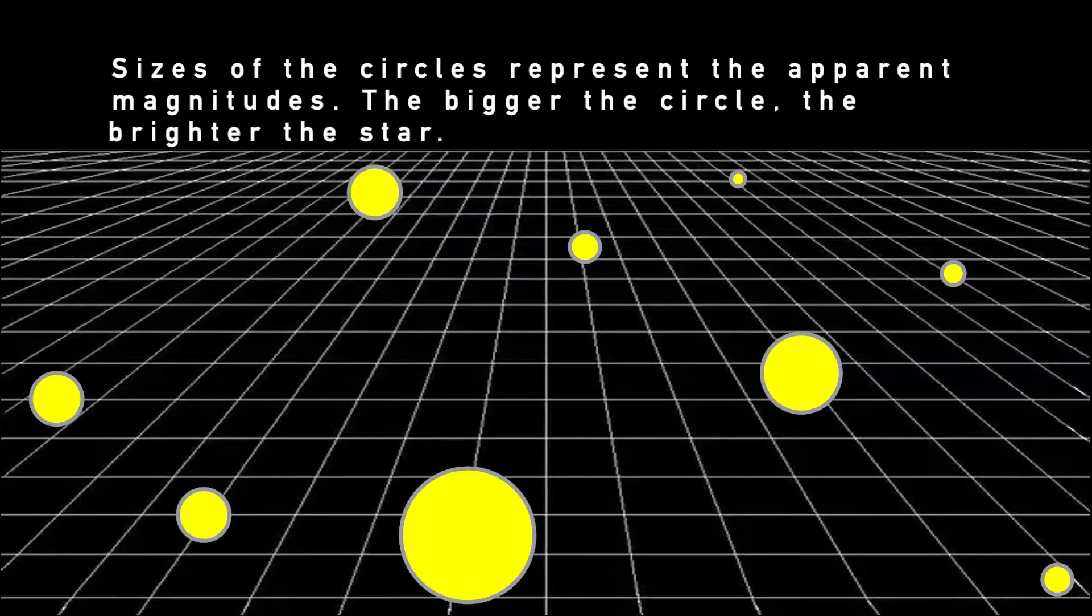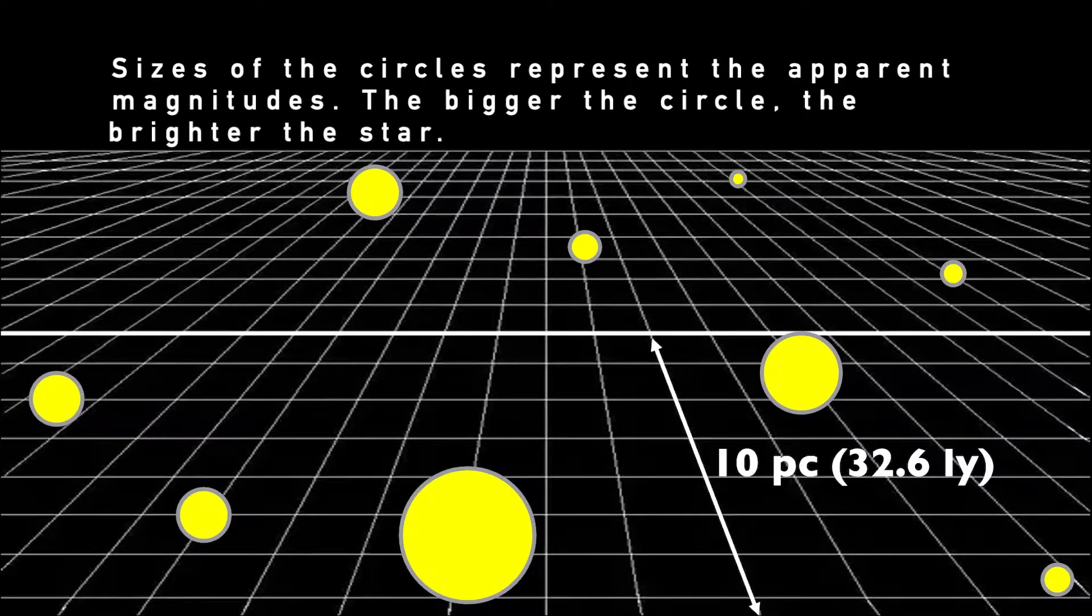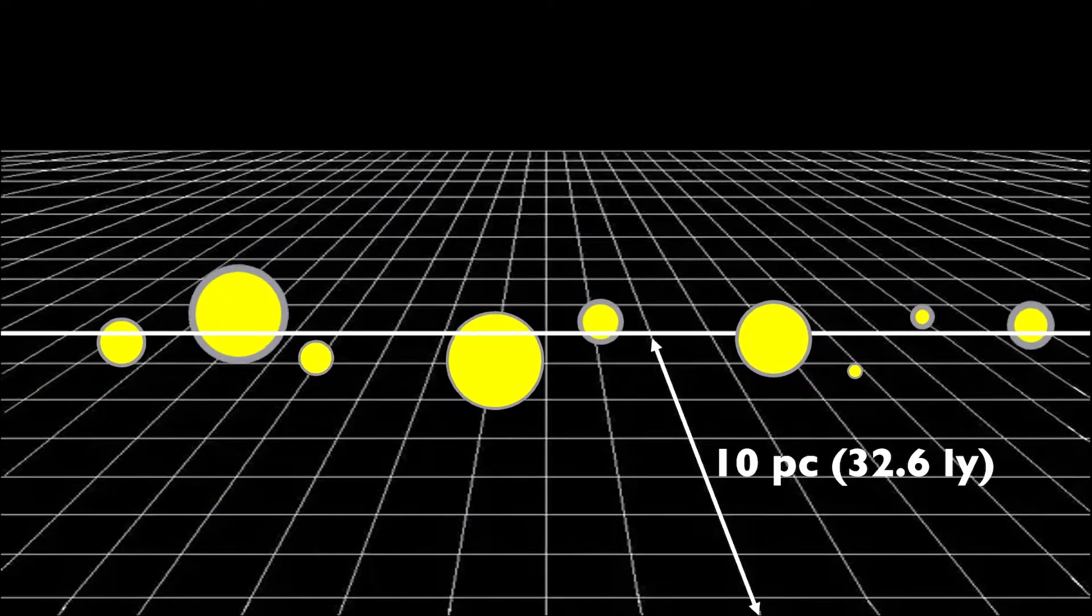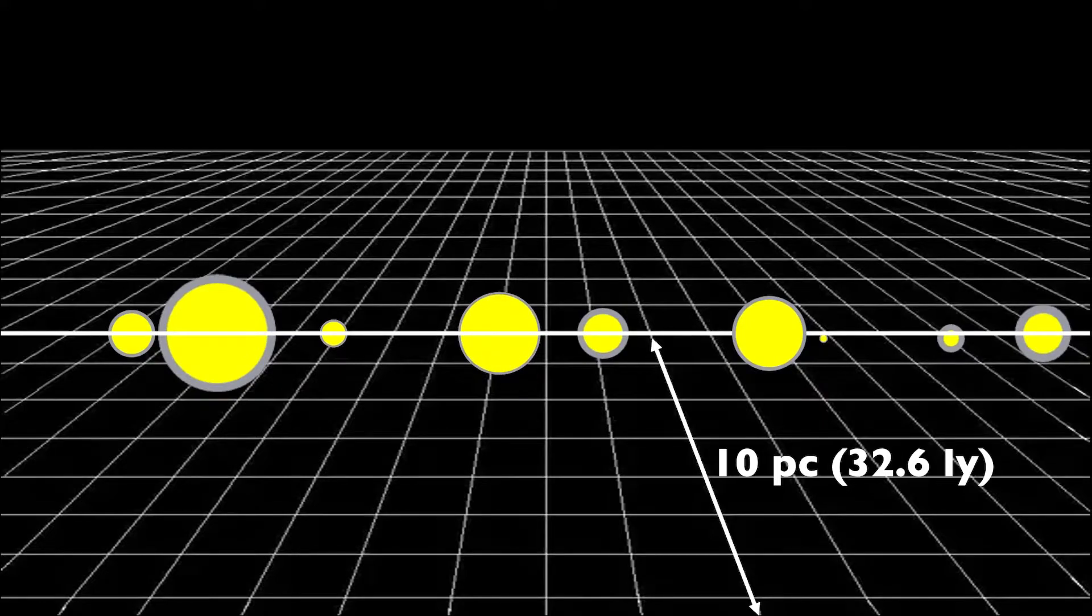But if we were to move them all, hypothetically of course, to a distance of ten parsecs, their brightness will inevitably change. We can now see their true brightness in comparison to one another as they are now momentarily side by side. Think of it this way.